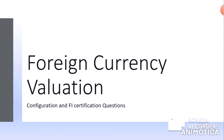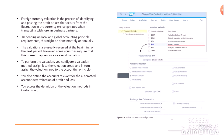What is foreign currency valuation? It is a process of identifying and posting the profit or loss that occurs from the fluctuation in currency exchange rates when transacting with foreign business partners. Depending on local and global accounting principle requirements, this might be done monthly or annually. The valuations are usually reversed at the beginning of the next period. However, some countries require that this does not happen for a year-end valuation.